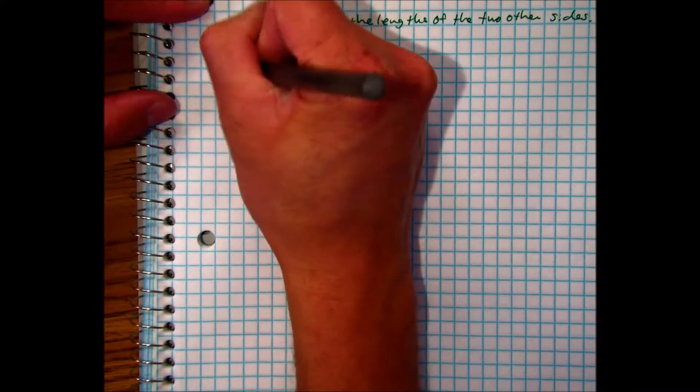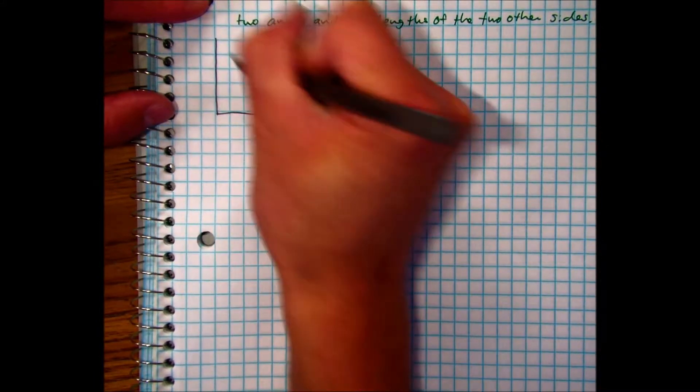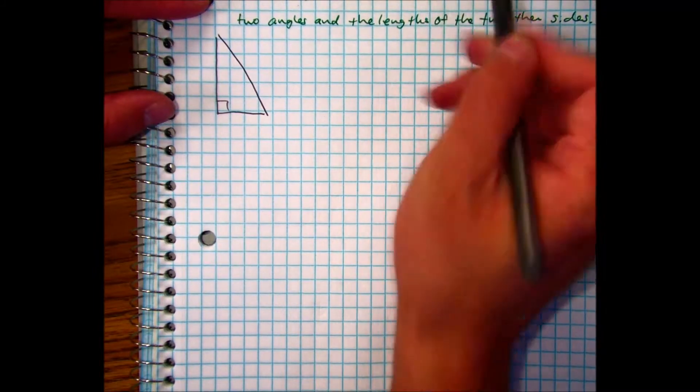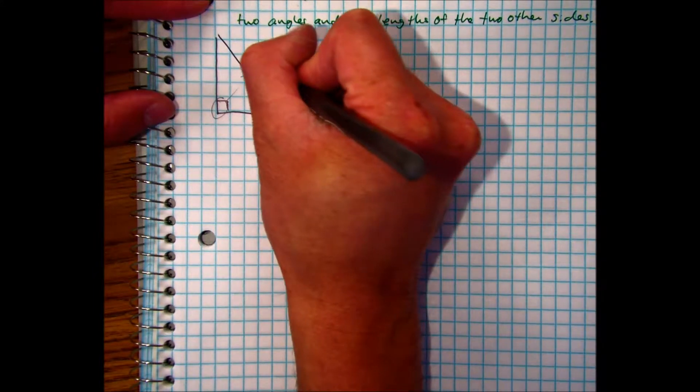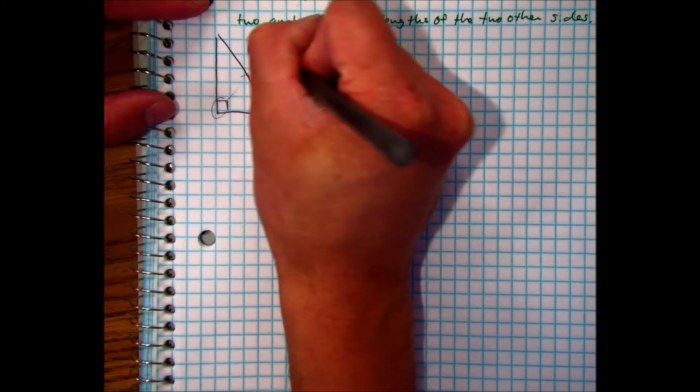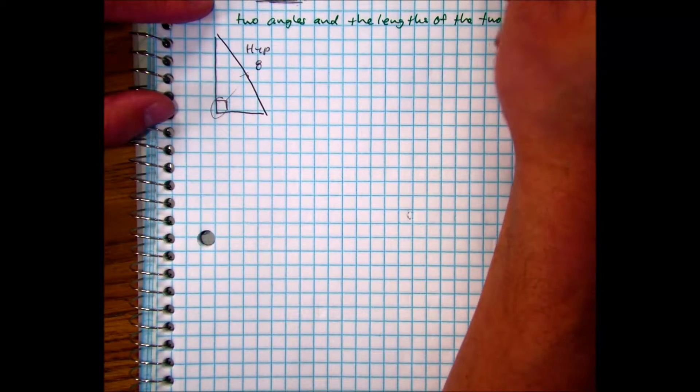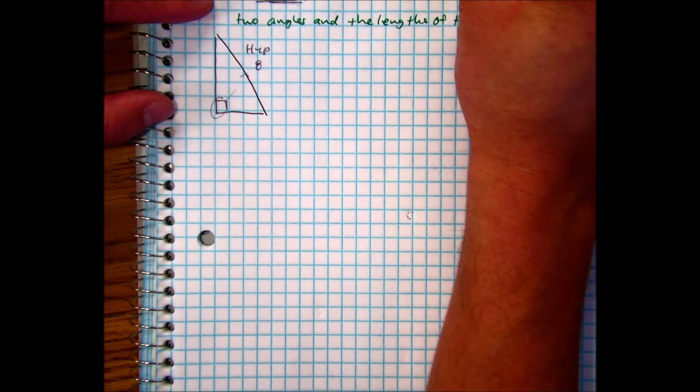So I'm going to draw a right triangle with a hypotenuse of 8. That's going across the right angle, so here's my hypotenuse, and a 37 degree angle. If you want to, you can also put check marks and put that information on your picture.